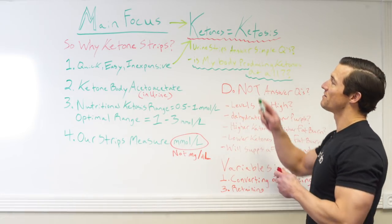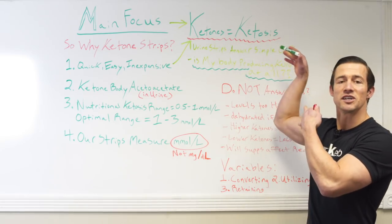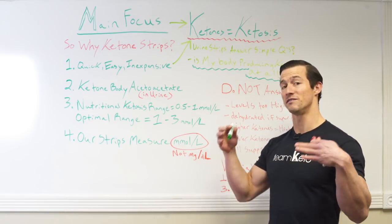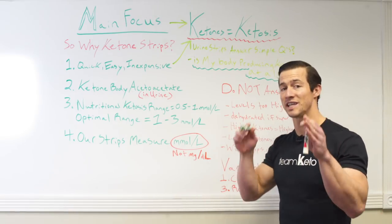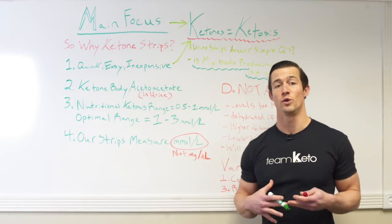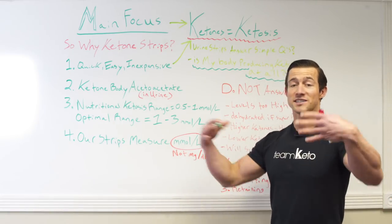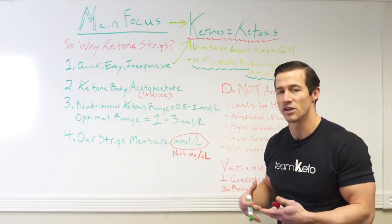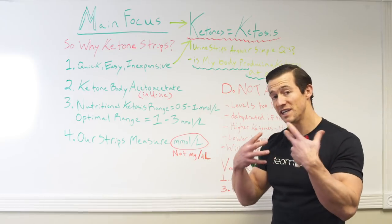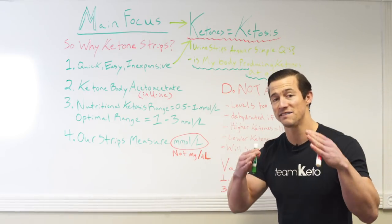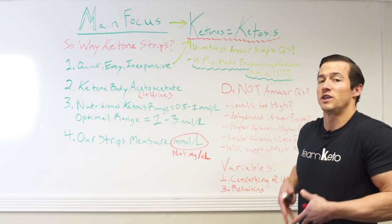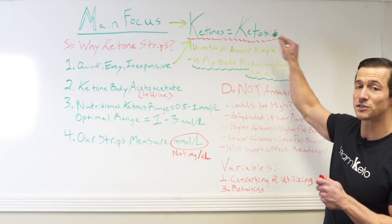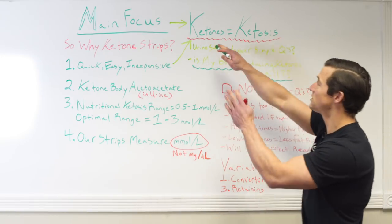Up here on the whiteboard, as you can see, I have the main focus: ketones equals ketosis. We're all here doing keto and the point of keto is to get yourself into that nutritional state of ketosis. In order to have your body in that state, you have to be producing ketones. As we've learned, ketones are mainly produced in the liver — whether from the fat you are ingesting, ketones from supplements, or your actual body fat, which is what we want most. If you are producing a sufficient amount of those ketones, then you are in the nutritional state of ketosis. That's why the main focus is ketones equal ketosis.